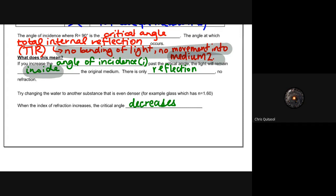All that stuff that we calculated was leading up to understanding and studying the concept of total internal reflection. Because if you do increase that angle of incidence past that critical angle, the light will remain inside the original medium. There will be no refraction. There was only going to be reflection.